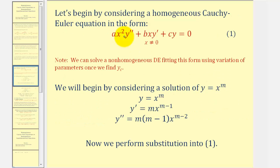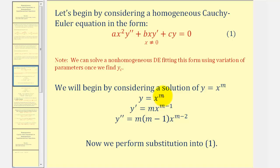Let's begin by considering a homogeneous Cauchy-Euler equation in this form, assuming x does not equal zero. We'll consider a solution in the form of y equals x raised to the power of m, then find the first and second derivatives and perform substitution into equation one. If y equals x to the m, then by the power rule, y prime equals m times x to the m minus one, and y double prime equals m times the quantity m minus one, times x to the m minus two.